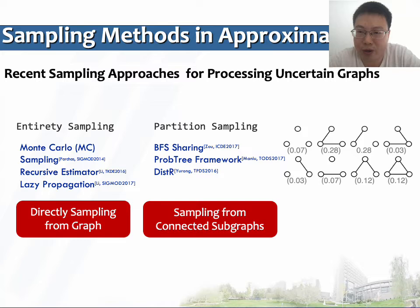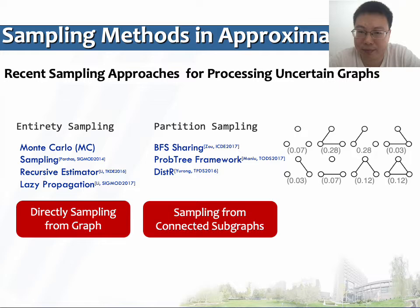Among these approximate solutions, two categories are identified: entirety sampling and partition sampling. Entirety sampling uses conventional Monte Carlo to directly and randomly sample a number of possible worlds from the entire uncertain graph. Ideas like lazy propagation and recursive sampling follow the Monte Carlo method to optimize entirety sampling. The other direction is partition sampling, including probtree, BFS sharing, and distr frameworks, which partition the uncertain graph into connected pieces and build an index to improve traversal performance. Partition sampling does not sample irrelevant partitions, thus reducing workload.